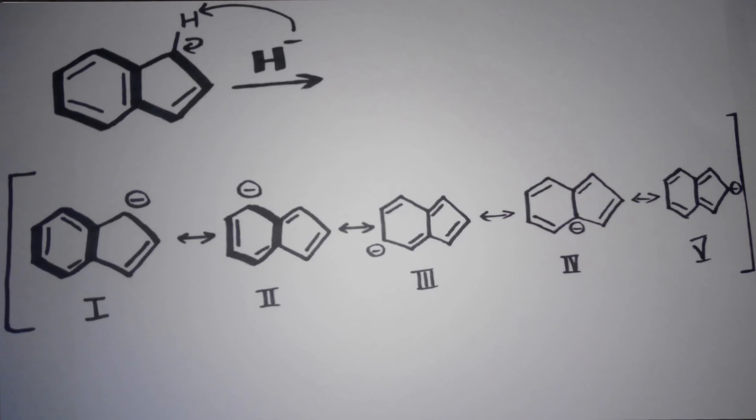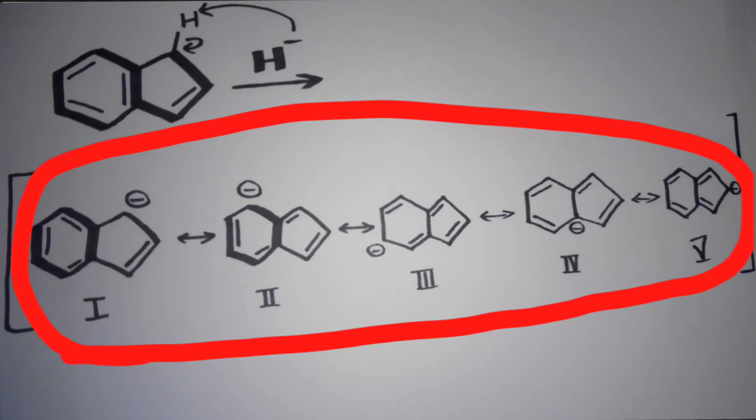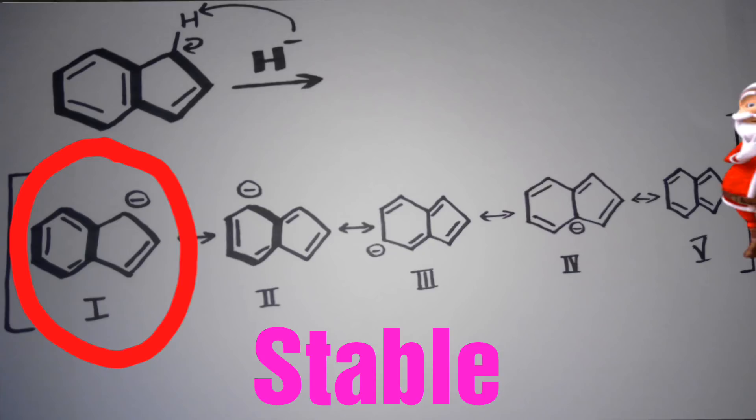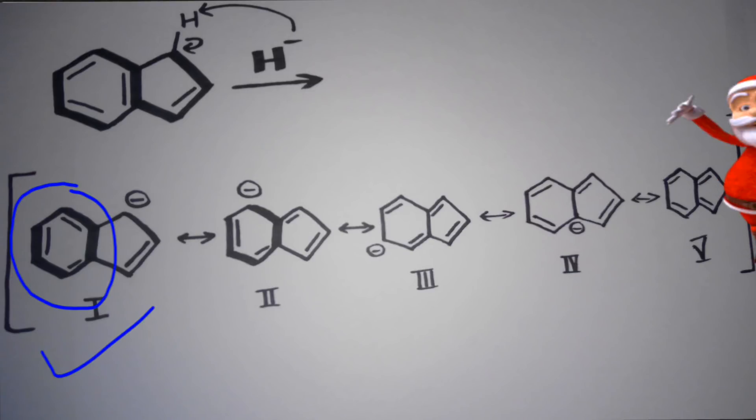Now we have 5 resonance structures. Out of all these structures, this one is the most stable because the aromaticity of the benzene ring is not disturbed.